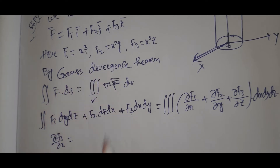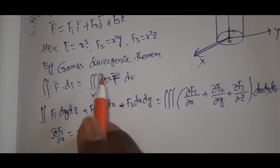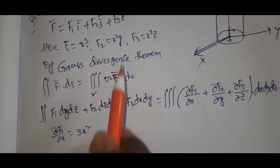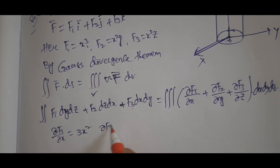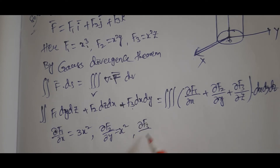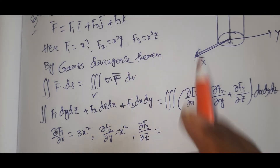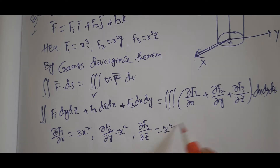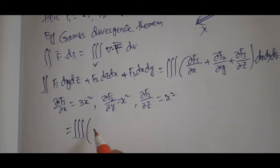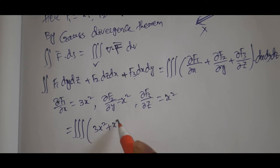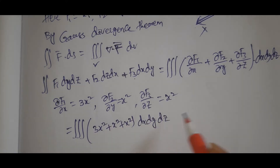Now we compute the partial derivatives: ∂F1/∂x = 3x², ∂F2/∂y = x², and ∂F3/∂z = x². So the integrand becomes the triple integral of (3x² + x² + x²) dx dy dz = triple integral of 5x² dx dy dz.